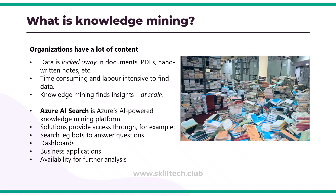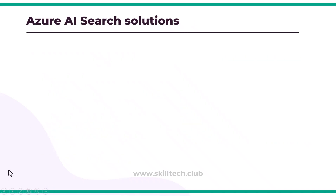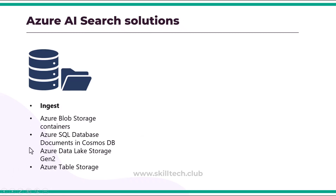Azure AI Search solutions basically have three different steps. Step one is ingest — you have to ingest your data. You can ingest data coming from Azure Blob Storage containers where data is stored in blob format. It can be a CSV file, a PDF, or a Word document.